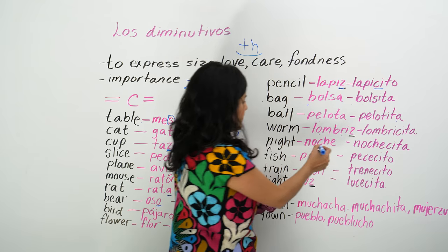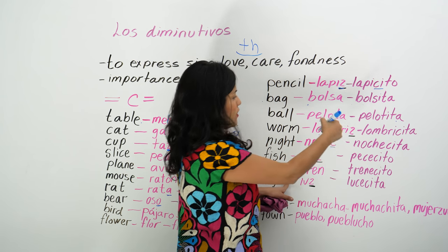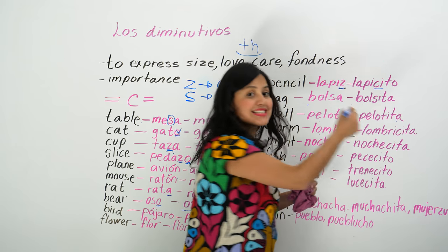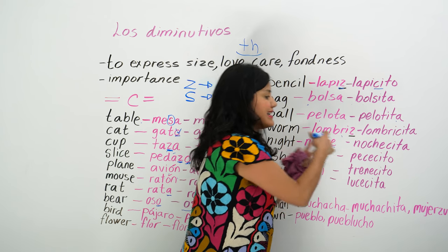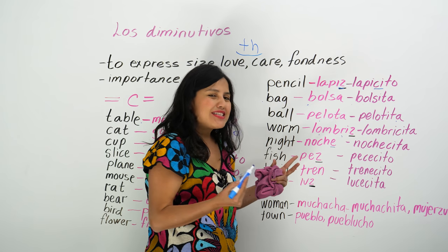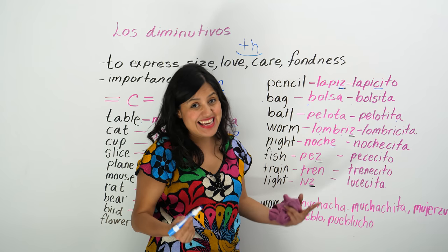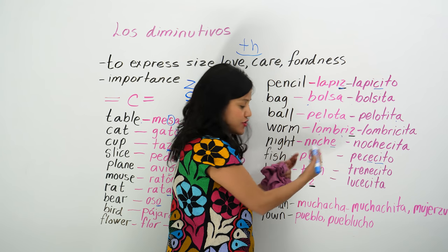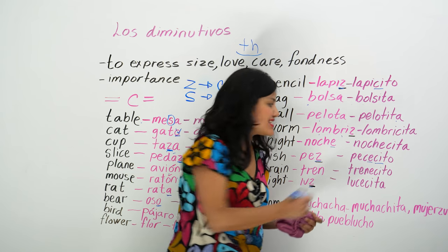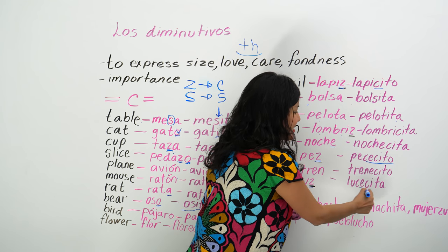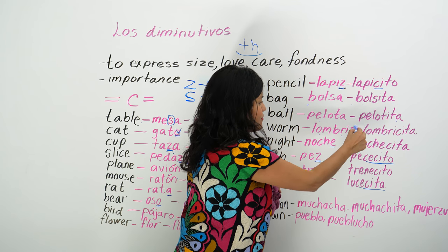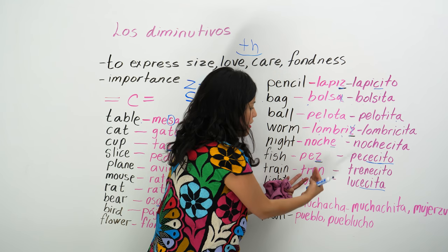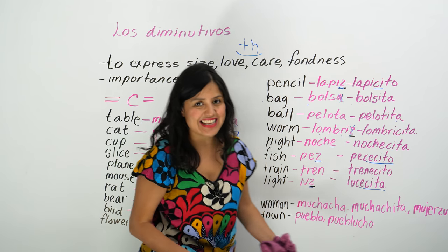Now, for lombriz: it already ends with a 'z', so you change the 'z' to a 'c' and add -ita, giving lombrizita — because it's a feminine word. For pez, you cannot say pesito — you have to add -ecito, making pececito. So if a word ends in 'z' and it's short, like luz or pez, you add -ecito or -ecita. For longer words ending in 'z', like lombriz, just take out the 'z' and add -cita. The gender determines whether you use -ecito or -ecita.